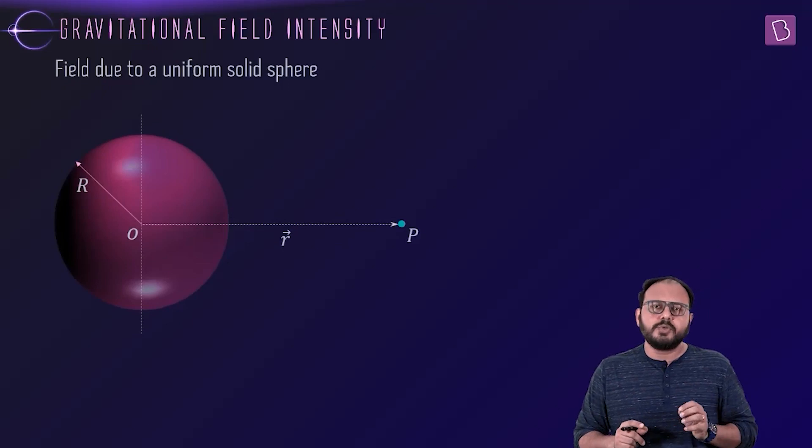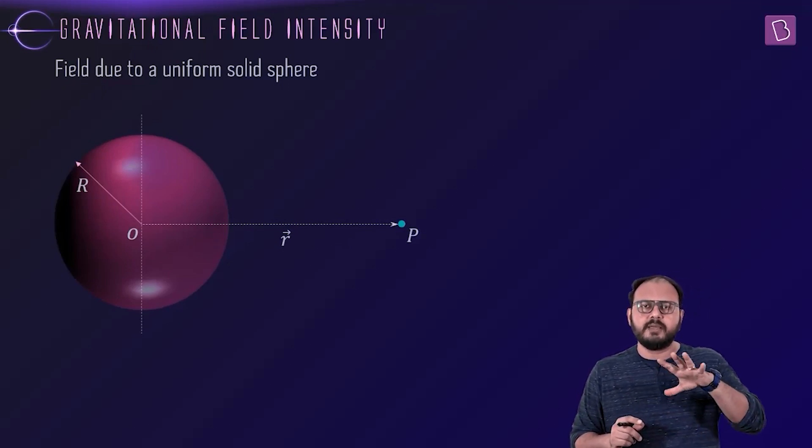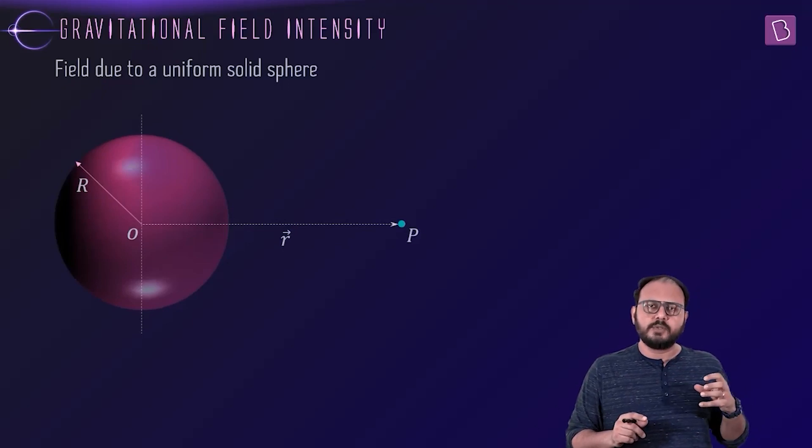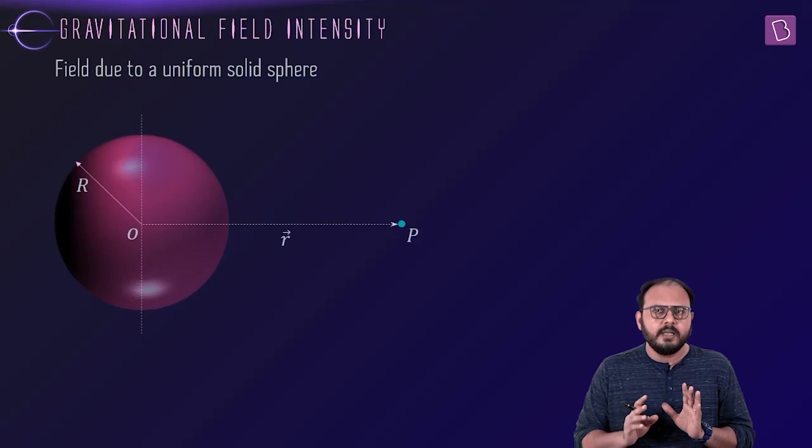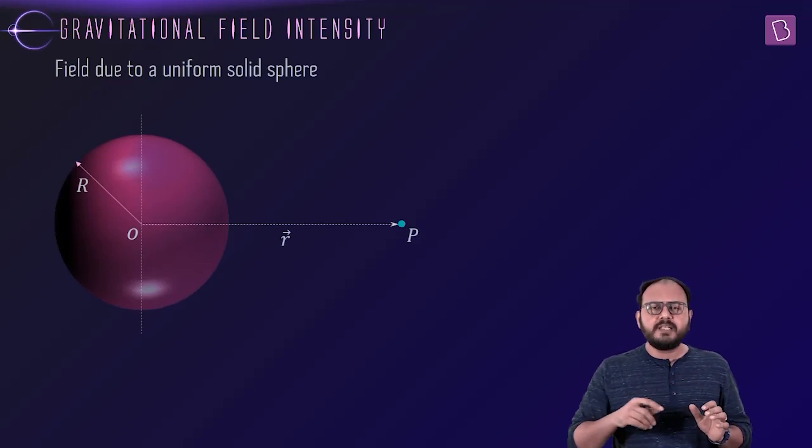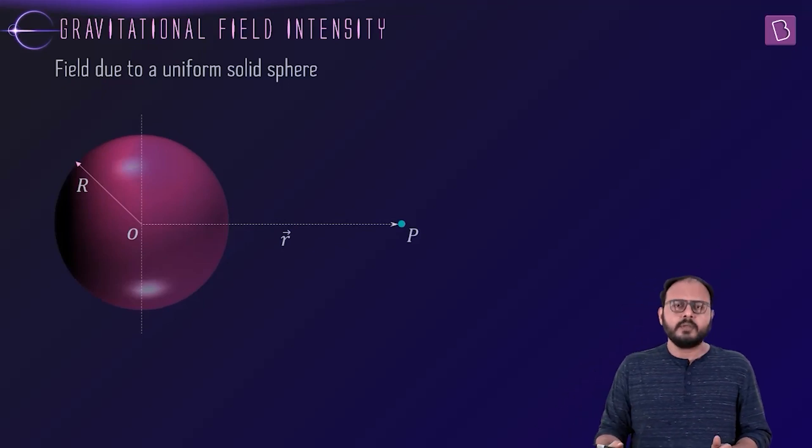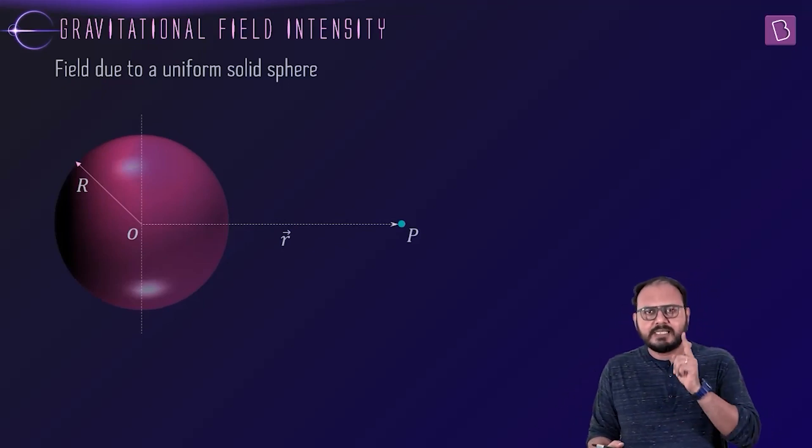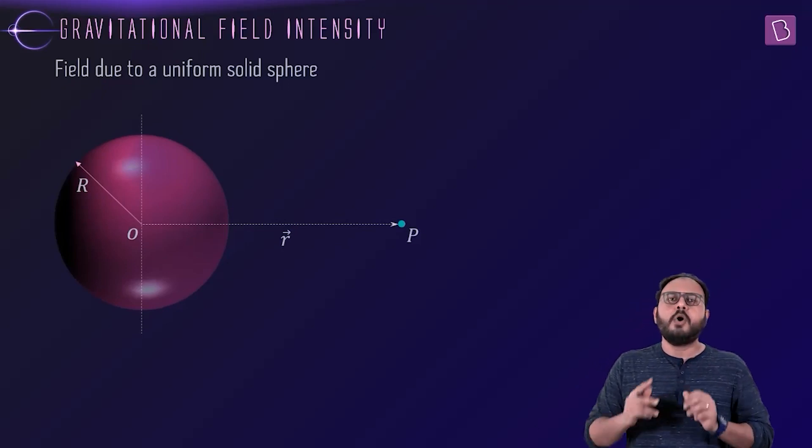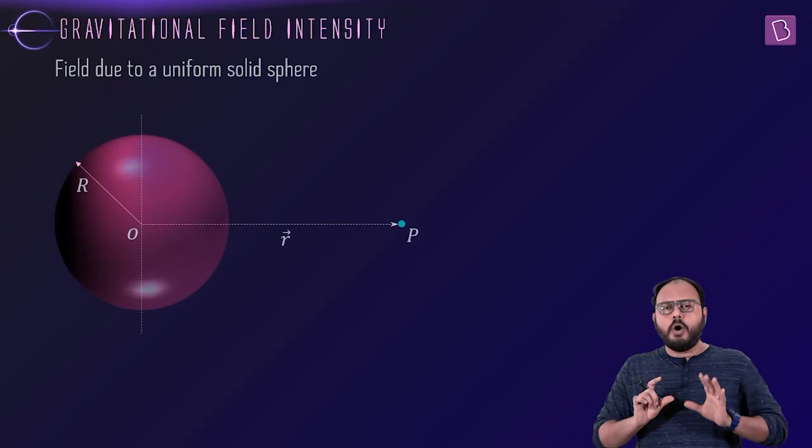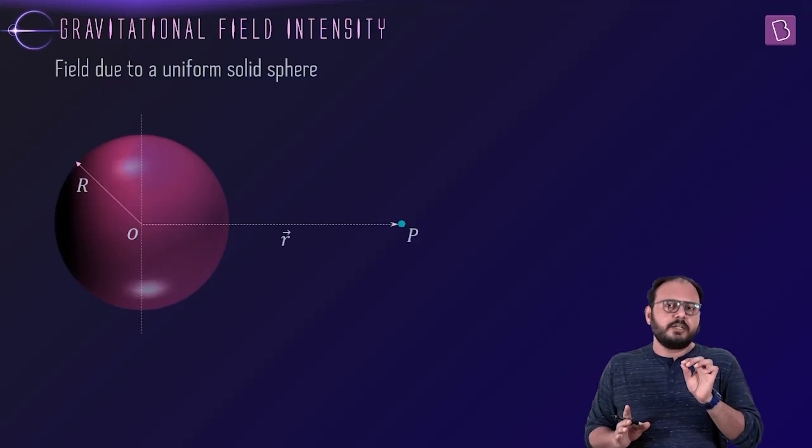If I spread it out, I'll say innermost shell of almost zero radius mass dm1, dm2, dm3, dm4, dm5... dm10,000... dm1 million... dm1 billion. What do all these billions and trillions of shells have in common? They all have the same center.